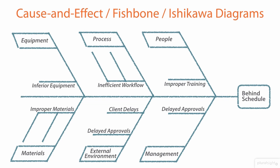Within each of these categories, we see additional potential answers. When it comes to people, perhaps we haven't trained our people correctly. When it comes to processes, perhaps our workflows are inefficient. Our equipment might be inferior, or we might be working with improper materials. For the external environment, perhaps we're waiting on information or approval from a client before proceeding. It could also be management failing to issue internal approvals to continue project work.